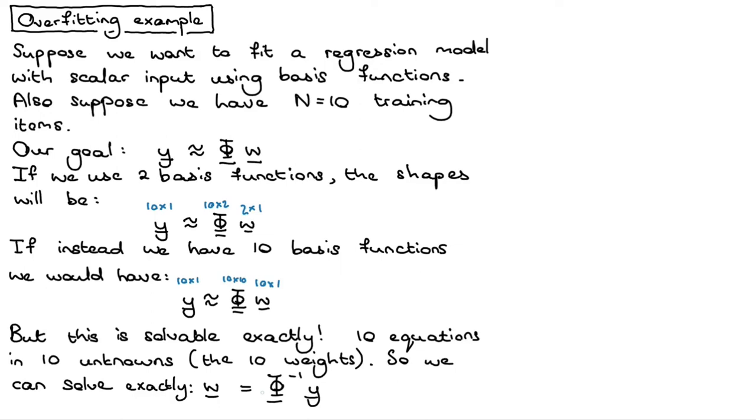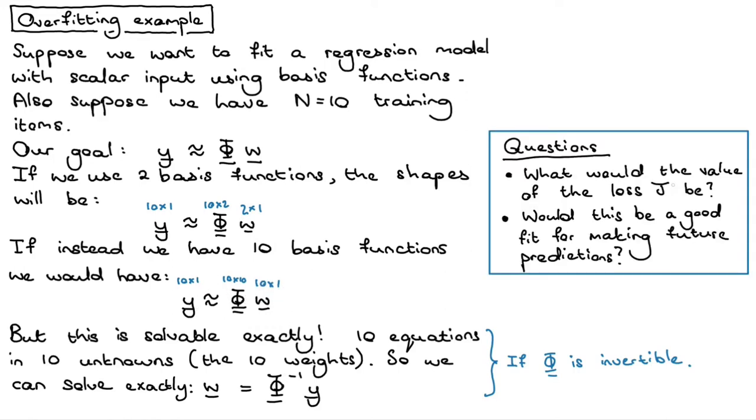There's a little caveat that you can only do this if phi is actually invertible. So if you do this, what do you think the value of the squared loss will be? In this case, where we have 10 basis functions. And secondly, do you think this will give good predictions on unseen data, data that isn't in our training data? The short answer is for this little toy example that the squared loss will actually have a value of zero in this case where we have 10 basis functions, but the model will actually be quite poor fit to unseen or future data. So it won't be making good predictions for future data points.